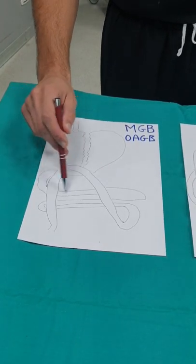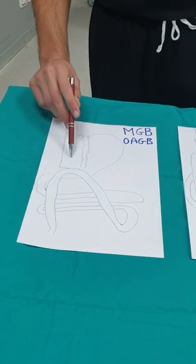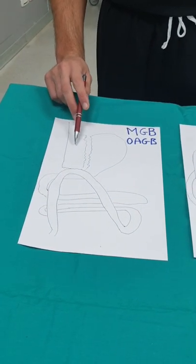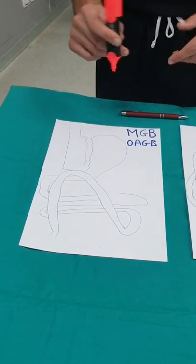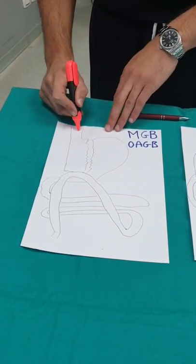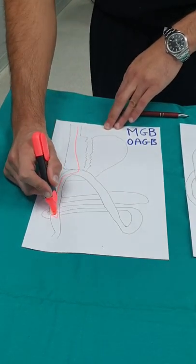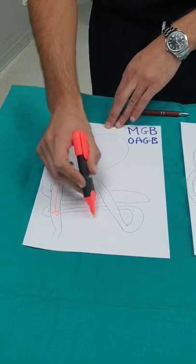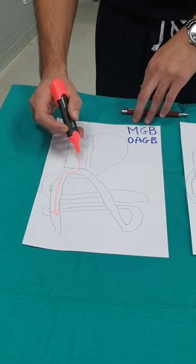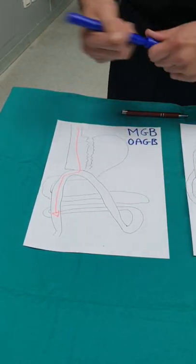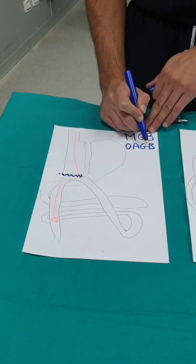And then we run down the bowel, take a distal segment and then connect it to the separated stomach. So this is the remnant stomach. So what happens, food will go down here all the way until it reaches the rest of your bowel. So this big chunk of bowel has been bypassed, hence the name bypass. So there's only one anastomosis here, hence the name one-anastomosis gastric bypass.